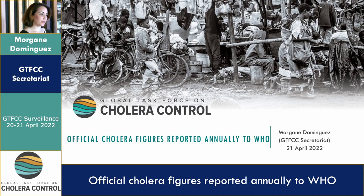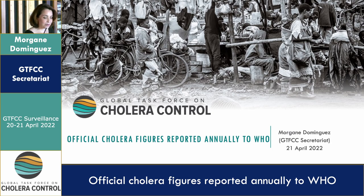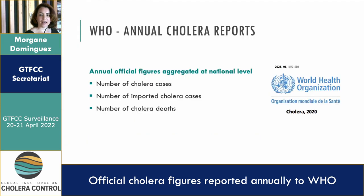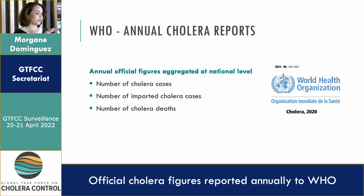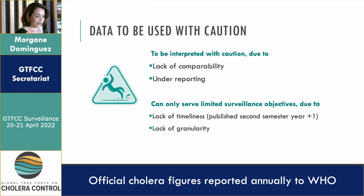To feed the discussion on supranational surveillance, in particular with regard to potential data sources, I'd like to present the annual figures reported annually to WHO. Most of you know that WHO publishes every year a cholera annual report. This is published online, and in the report we have aggregated figures at national level — for a given country and year, the total number of cases, including possibly imported cases, and the total number of deaths.